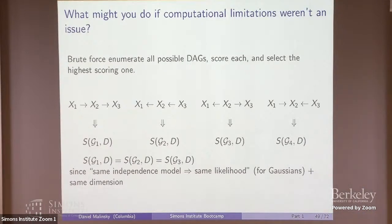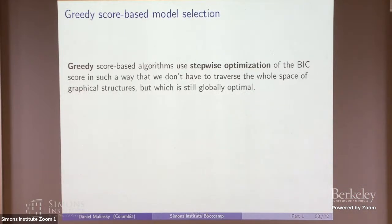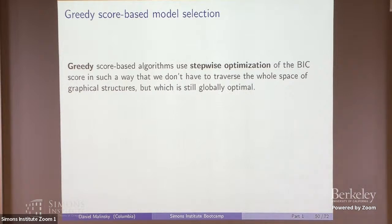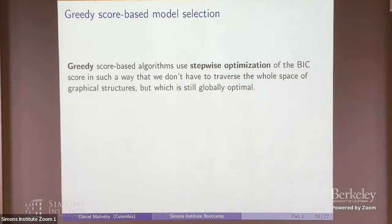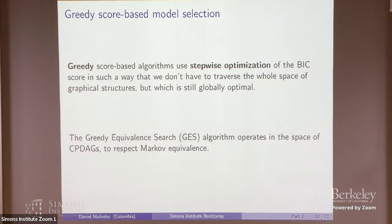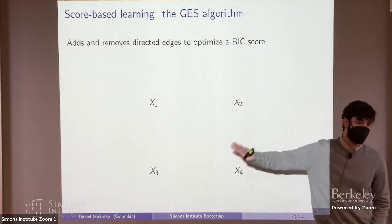Instead of brute force search, the standard approach is a greedy score-based algorithm: stepwise optimization of the BIC score without traversing the whole space of graphical structures, making local moves between neighboring graphs that are still ideally globally optimal. Provably, it finds the optimal scoring graph in the limit as n goes to infinity. That's what the Greedy Equivalence Search, GES, algorithm does — operating in the space of CPDAGs, Markov equivalence classes of graphs.